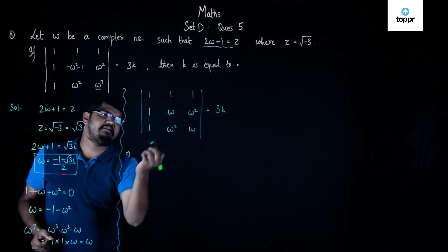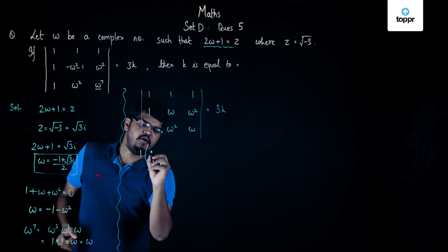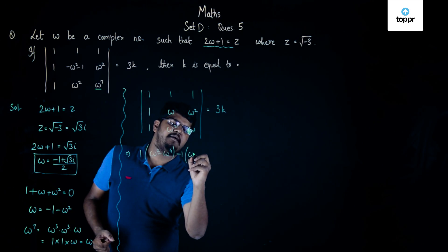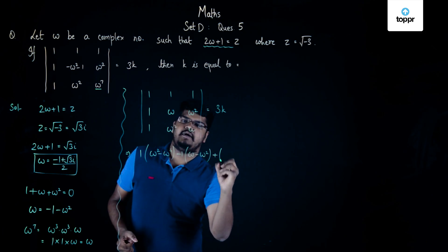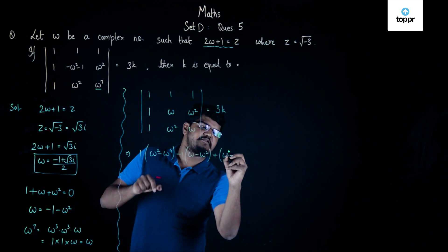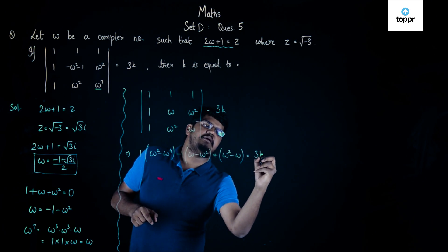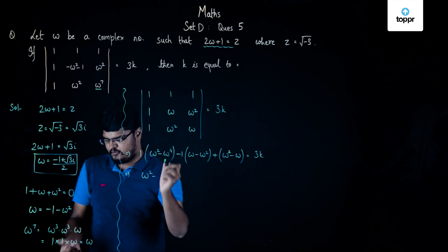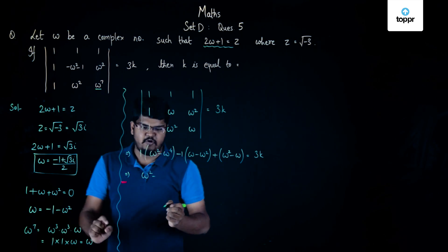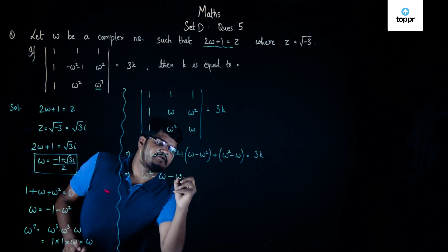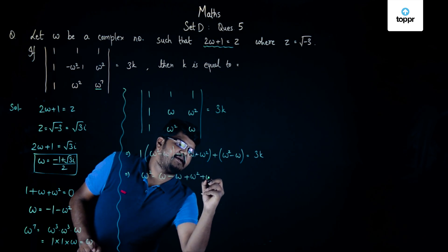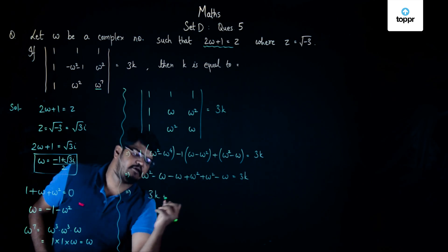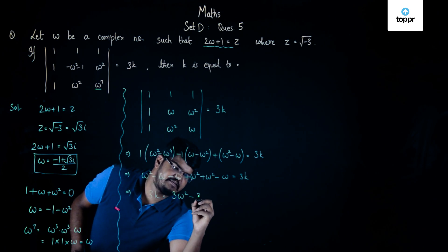If we expand this determinant, it will become 1 times (omega squared minus omega to the power 4) minus 1 times (omega minus omega squared) plus 1 times (omega minus omega squared minus omega), and this is equal to 3k. Upon simplification, omega to the power 4 becomes omega cubed times omega, which is simply omega. So it becomes omega minus omega plus omega squared plus omega squared minus omega, which equals 3k, and so 3k is equal to 3 omega squared minus 3 omega.